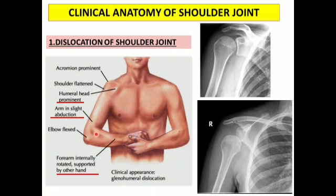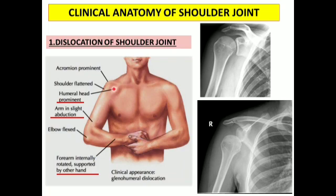The hand region will be supported with the opposite hand. This is because without that support, pain will be increased by gravity — already the shoulder is dislocated, and with no support from below, the pain gets aggravated. So the patient will naturally support the limb with the opposite upper limb. Another thing: just beneath the lateral aspect of the clavicle, you can see a swelling or palpate the head of the humerus, which has been displaced downwards and forwards.